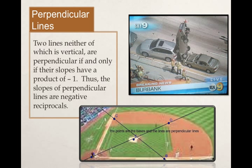Perpendicular lines. And I know some of you are probably already laughing at the car wreck there. I saw that picture and I thought, holy cow. Two lines, neither of which are vertical, are perpendicular if and only if their slopes have a product of negative 1. The way we say two slopes have a product of negative 1 is to say the slopes are negative reciprocals.